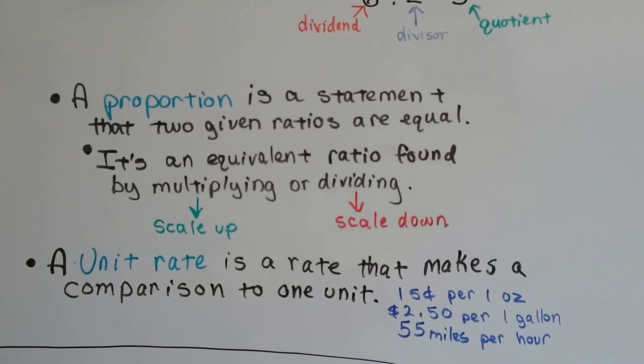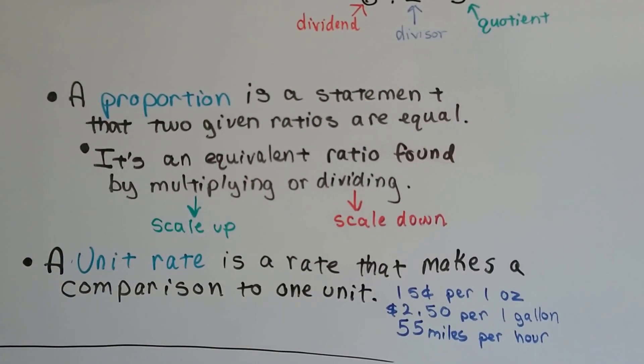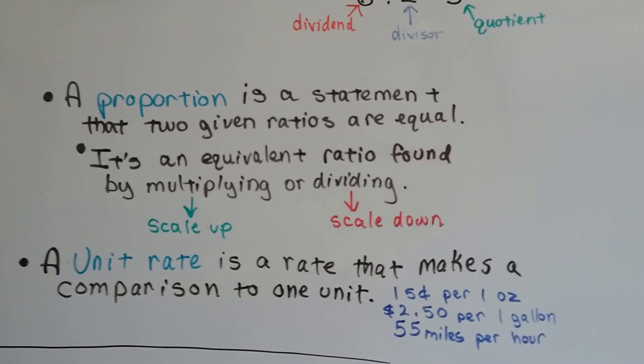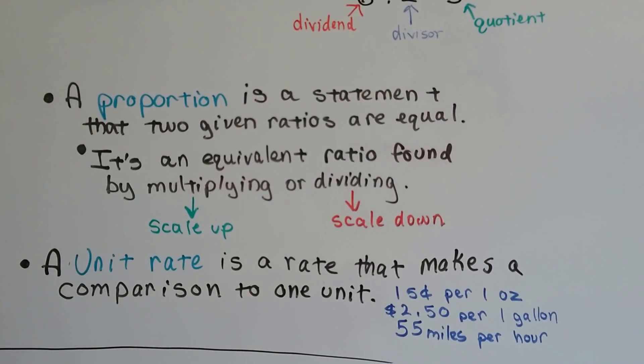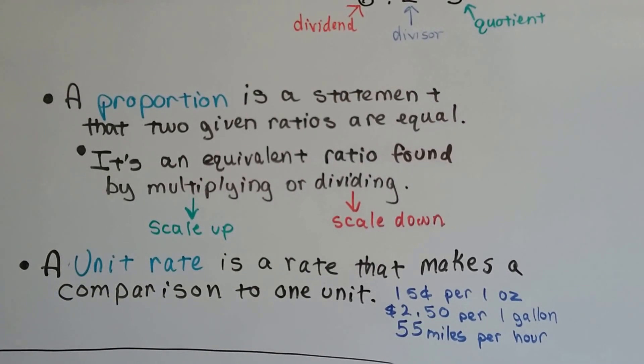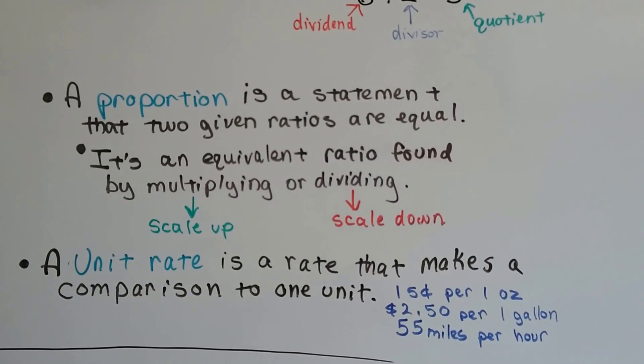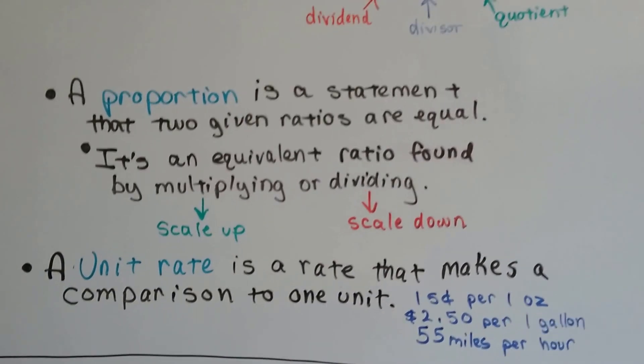A unit rate is a rate that makes a comparison to one unit, like ounces, gallons, or hours. For example, 15 cents per ounce, $2.50 per gallon, or 55 miles per hour. That's a unit rate.